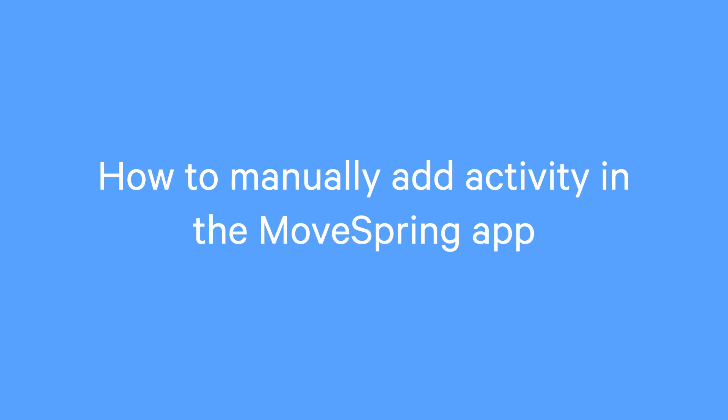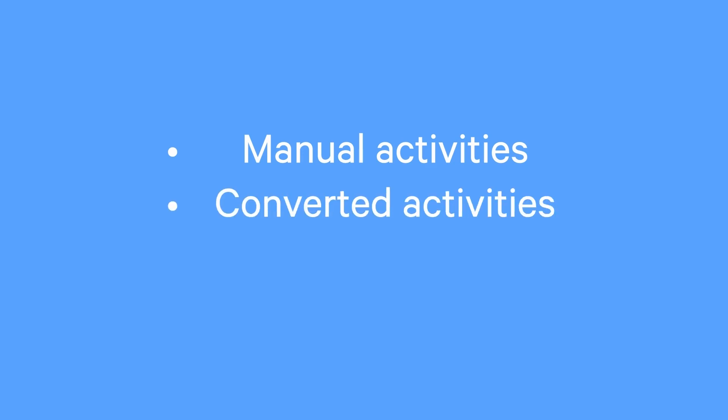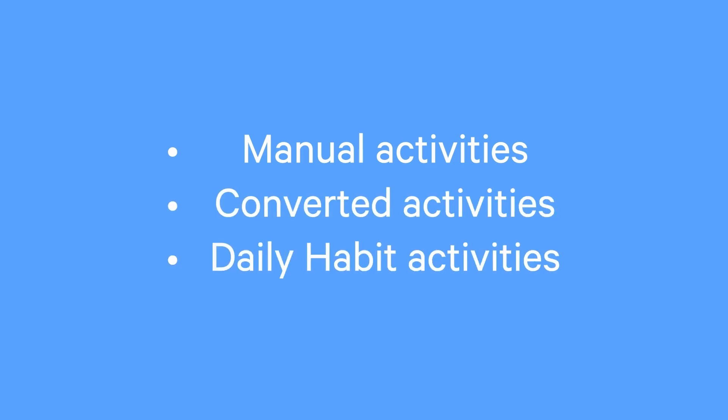Here we will walk through how you can manually add your activity data into Movespring. There are three types of data you can log: manual activities, converted activities, and daily habit activities. As a heads-up, your challenge admin has the option to disable manual and converted activities. If you don't see the option to add these activities, then it is not allowed for your challenge at this time.